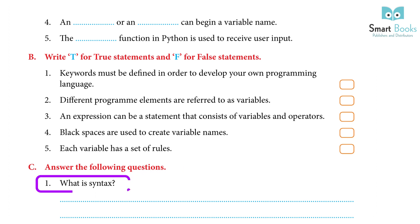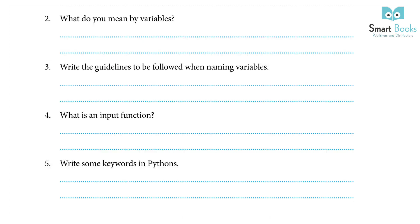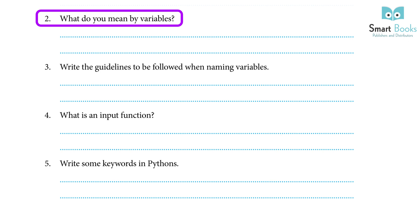Answer the following questions: 1. What is syntax? Answer: Syntax is the collection of guidelines that must be followed while writing programming statements. 2. What do you mean by variables? Answer: Variables are places in a computer's memory where values can be stored. These values are retrieved from memory during processing, where they are subsequently processed to produce output. Each variable has a set of values and distinctive names.